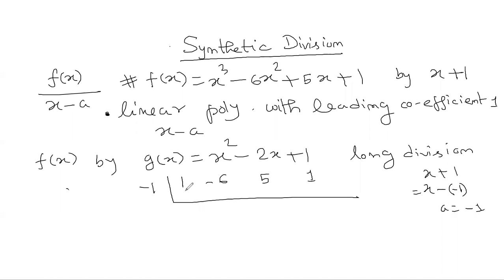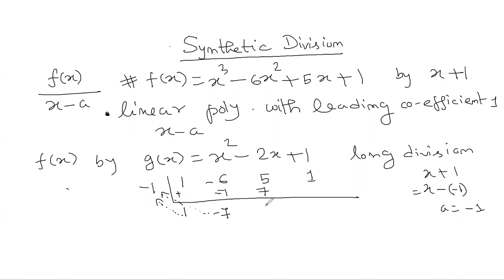We bring the leading coefficient 1 down unchanged. Then multiply: 1 times minus 1 is minus 1, put it under the next coefficient. Add minus 6 plus minus 1 to get minus 7. Repeat: multiply minus 7 times minus 1 equals 7; add 7 plus 5 to get 12. Then 12 times minus 1 is minus 12; minus 12 plus 1 is minus 11.